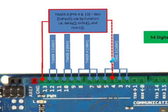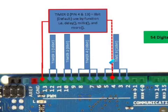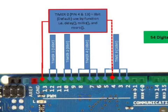Timer 3 utilizes pin 2, pin 3, and pin 5. Timer 3 is not attached to any library software, so it is free to use without any conflict. Timer 4 has 16-bit resolution and utilizes pin 6, 7, and 8 when timer 4 is active.